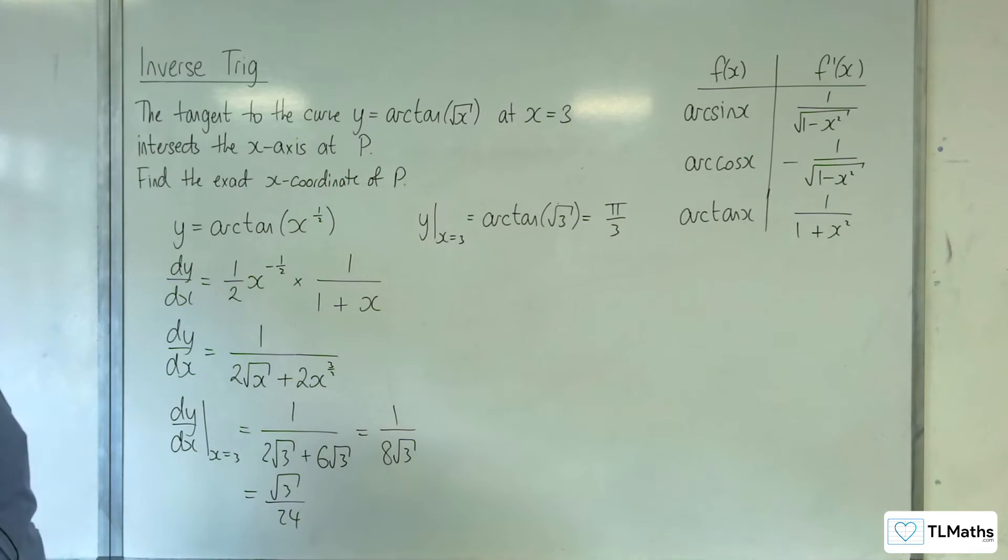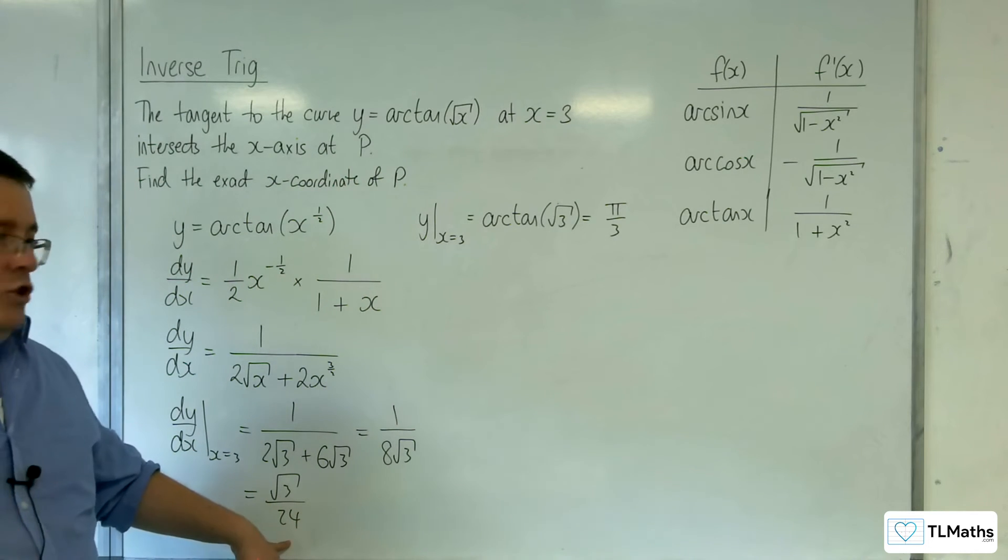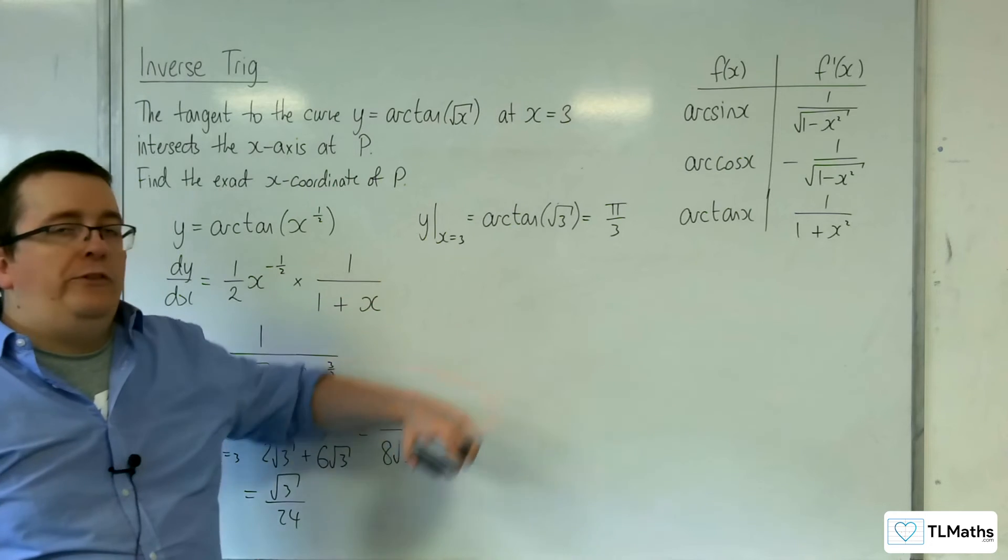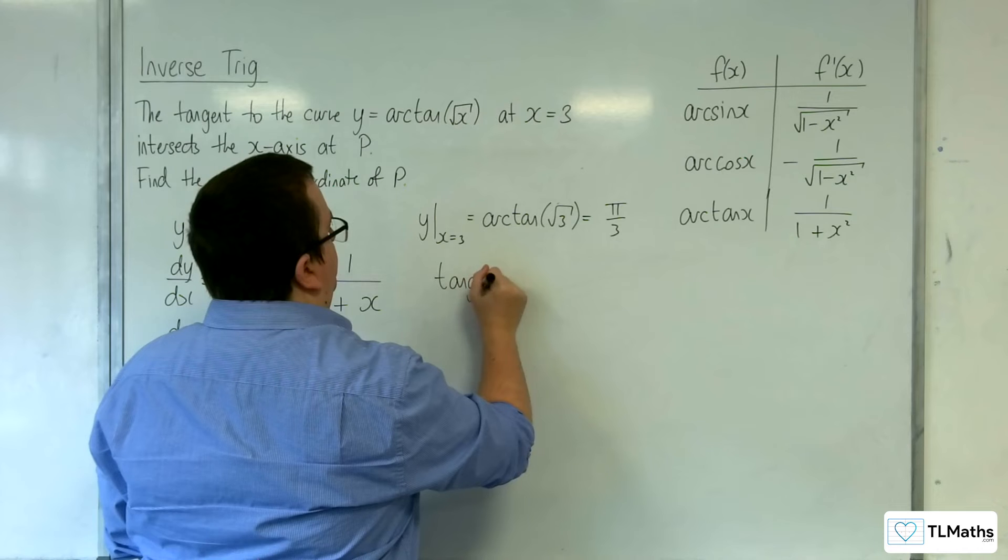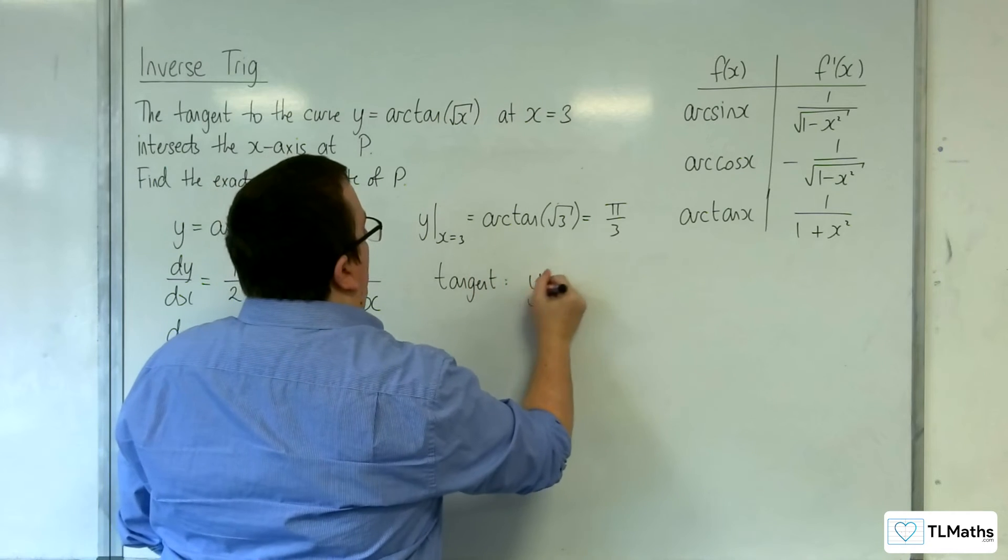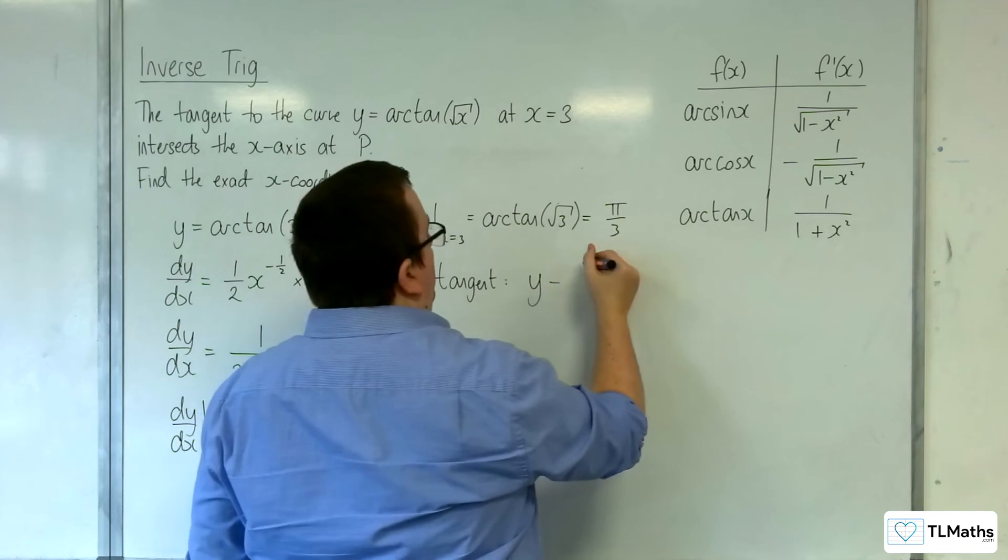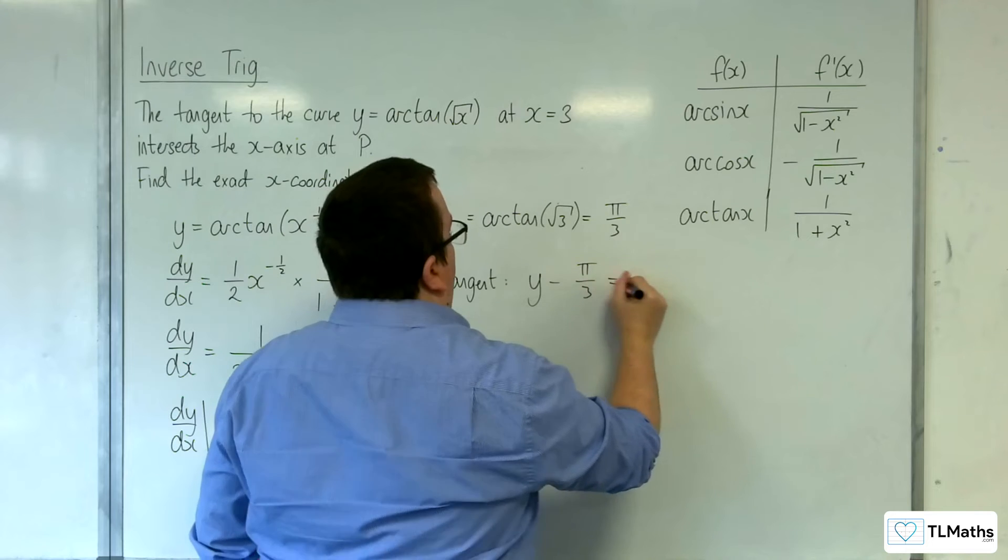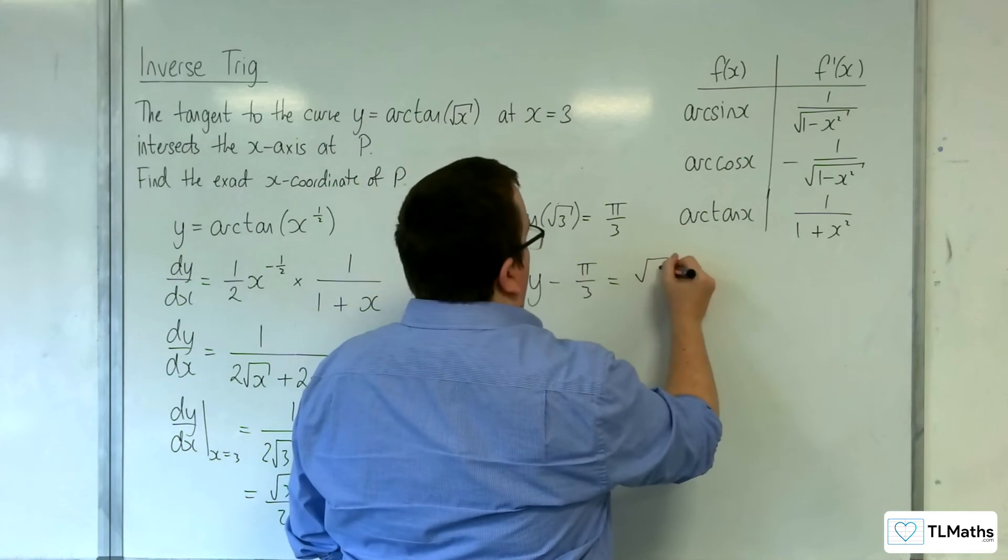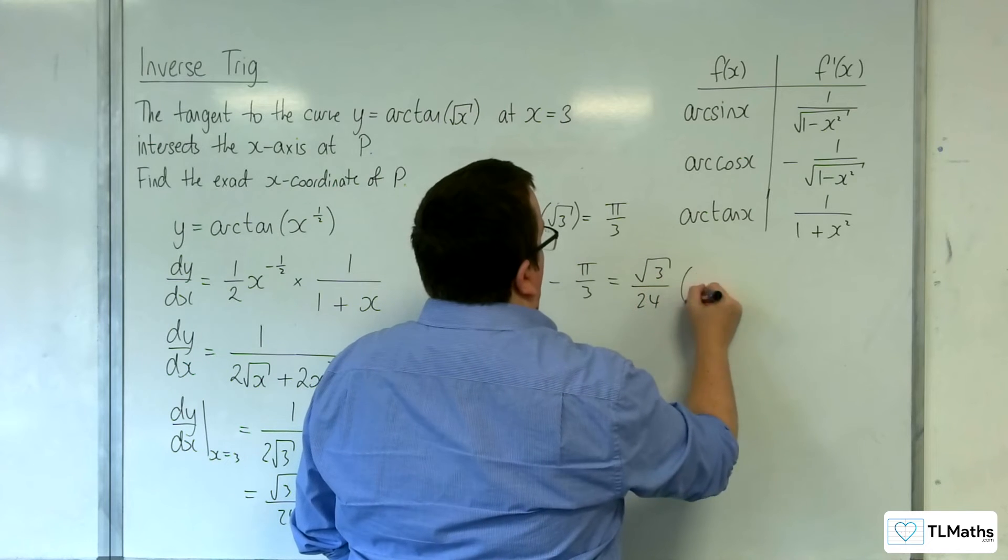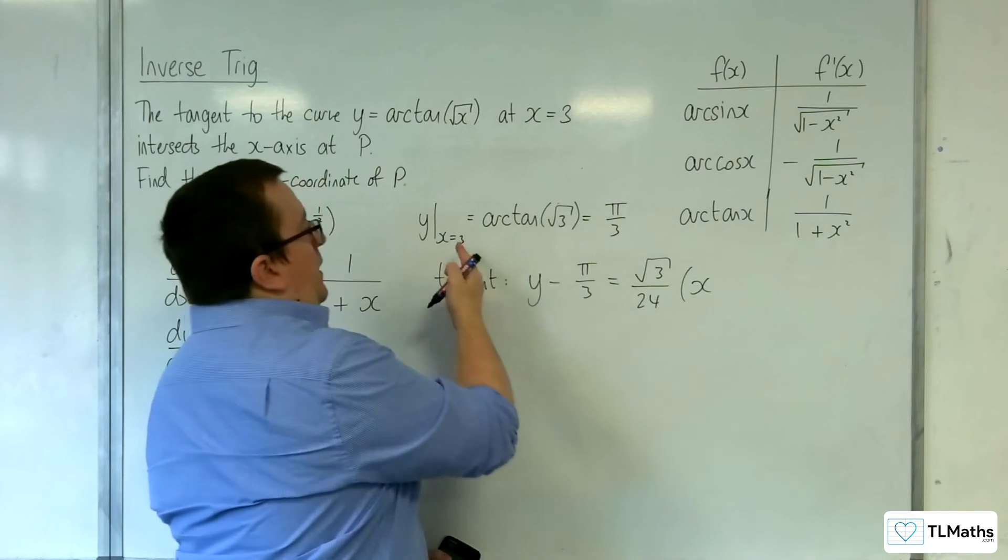So we know the gradient of the tangent line and we know the coordinates of where it's going through, so we can write down the equation of the tangent now. So y minus y1 is equal to m, root 3 over 24, times x take away x1, so x take away 3.